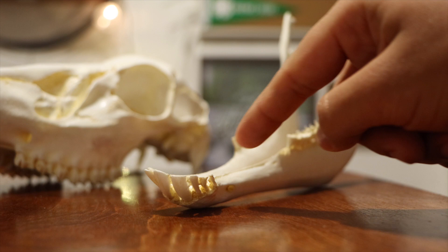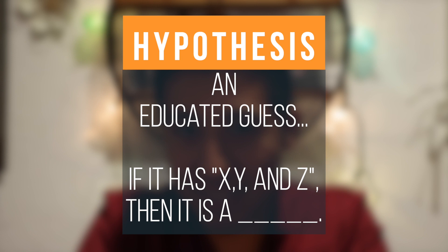So you can now ID if the animal is a predator or prey, and if the animal is a carnivore, an omnivore, or an herbivore. But now what? Well, in order to correctly identify the skull, we're going to need to start thinking like a scientist. To do that, we're going to form a hypothesis, or an educated guess. So my hypothesis would be: if the skull has X, Y, and Z, then it must be a blank.